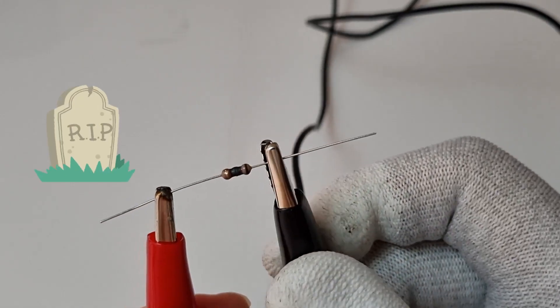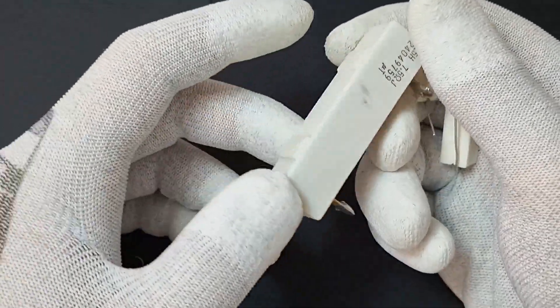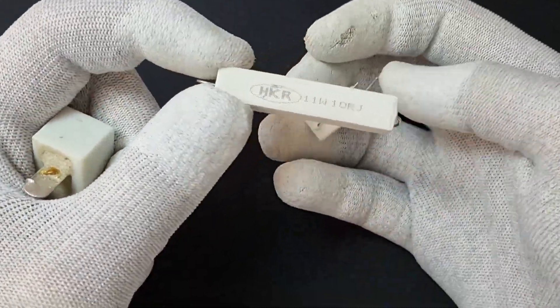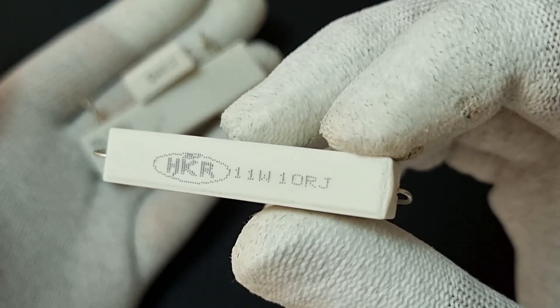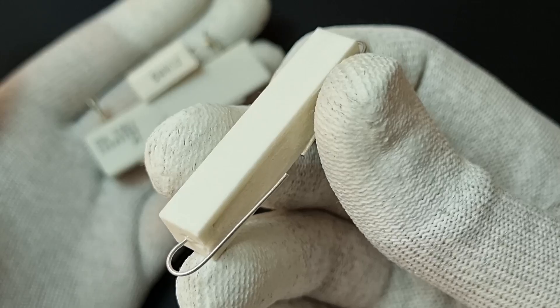Another type of through-hole resistor is the wire wound resistor. These usually have a power rating of more than 5 watts. For example, this one is rated for 10 watts and has a resistance of 10 ohms.